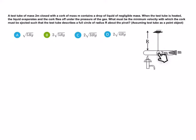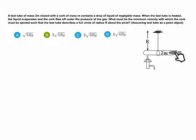यह test tube इस तरह से circular motion में पूरा circle complete करेगा, क्योंकि जब cork outward move होगा तो यह opposite direction में, by Newton's third law, force exert करेगा। तो अब question यह है कि इस test tube को पूरा circle complete करने के लिए इस cork की velocity कितनी होनी चाहिए।